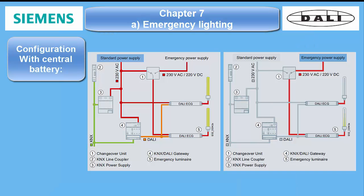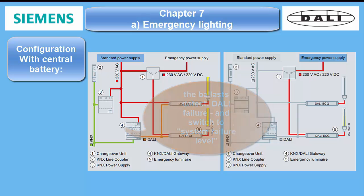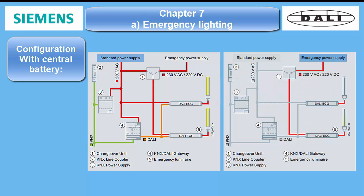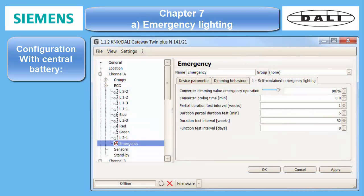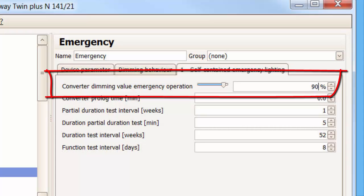2. Configuration with central battery operation. As mentioned before, all DALI ECGs support the safety lighting option in general. That means if the control line — the DALI bus — doesn't operate anymore, which usually happens when the main supply for the DALI gateway fails, the ECG will switch into the so-called system failure level, if it is still under power from safety power supply. All the system integrator has to do is set the required light level parameter in the ECG's options.